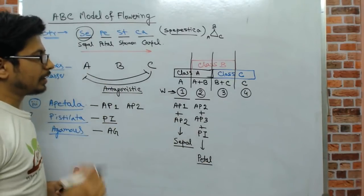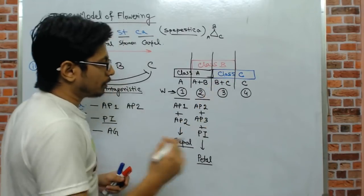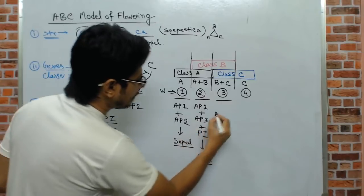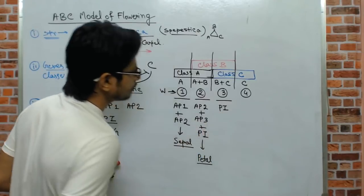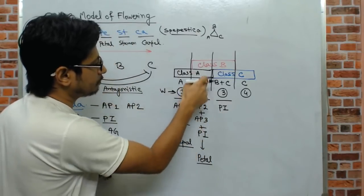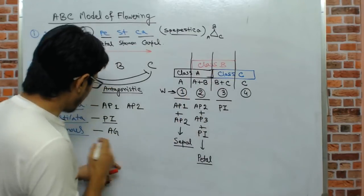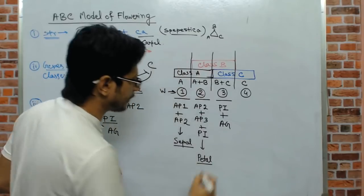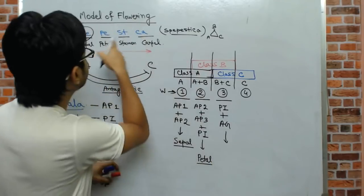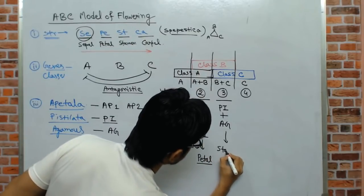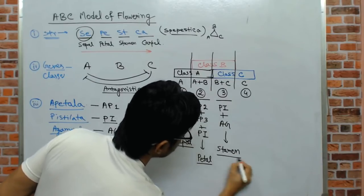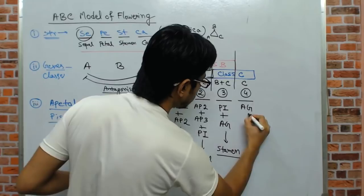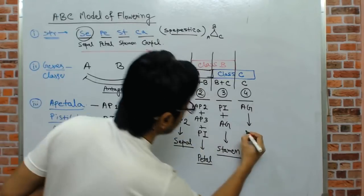In segment 3, where class B and class C both express together — Pistillata coming from class B, and Agamous from class C — together they give the identity of stamen. In segment 4, where only Agamous expresses, that gives the identity of carpel.